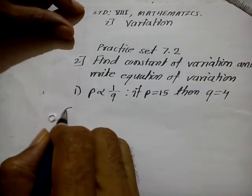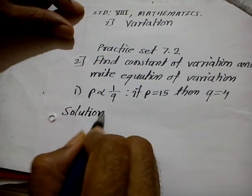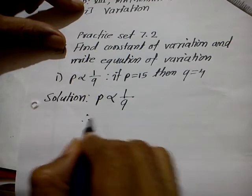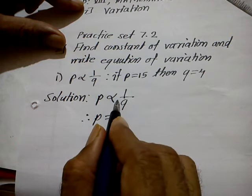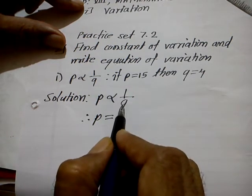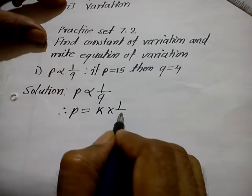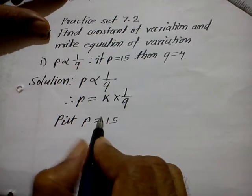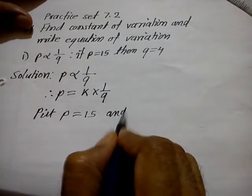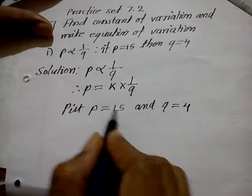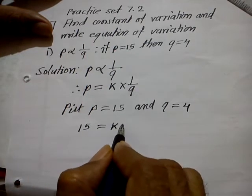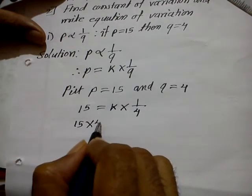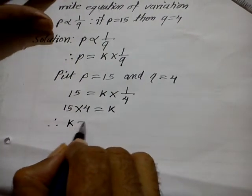See how to solve this one. P is inversely proportional to Q. Therefore, P is equal to K into 1 upon Q. Put the values: P is equal to 15 and Q is equal to 4. So 15 is equal to K into 1 upon 4. Therefore, 15 into 4 is equal to K, so K is equal to 60.